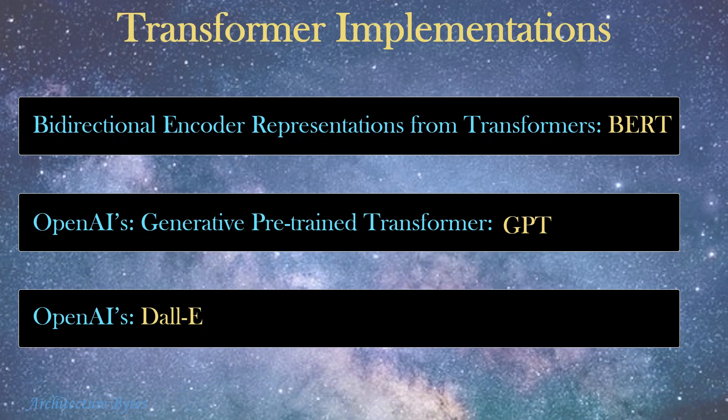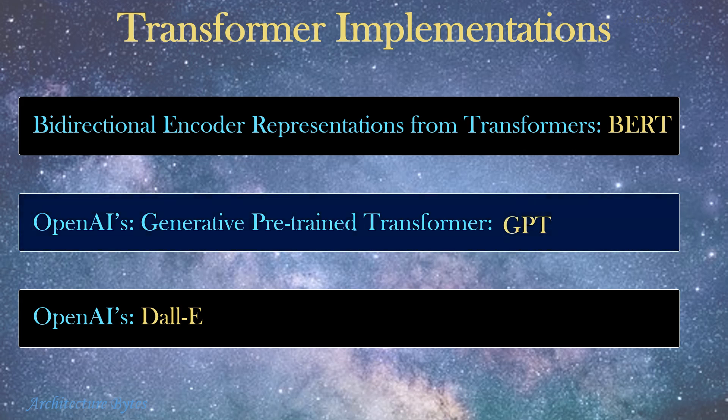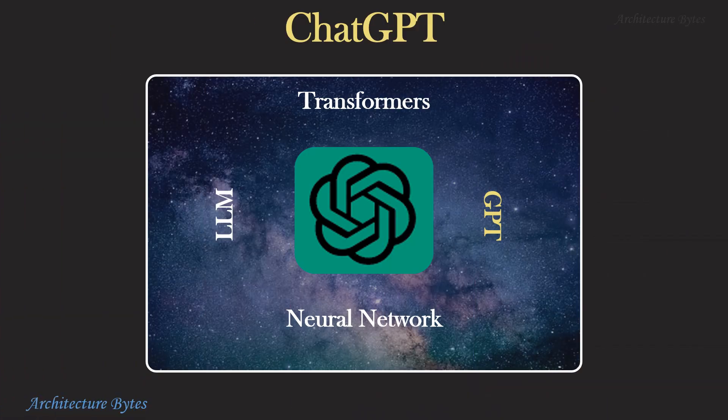Here are some examples of transformer implementations: Google's BERT, OpenAI's GPT or Generative Pre-trained Transformers, and DALL-E which is used to generate images from a short description. Our focus here is GPT, which is used by ChatGPT. GPT has undergone several iterations including GPT-2, GPT-3, GPT-3.5, and so on.